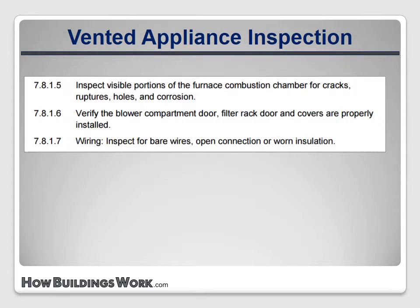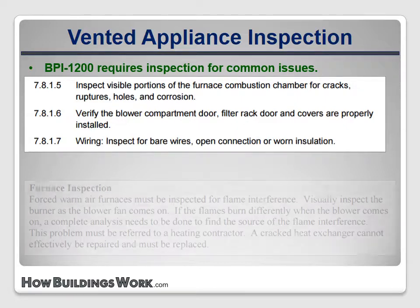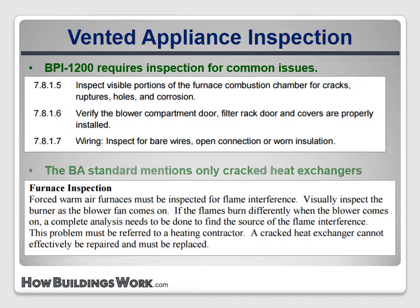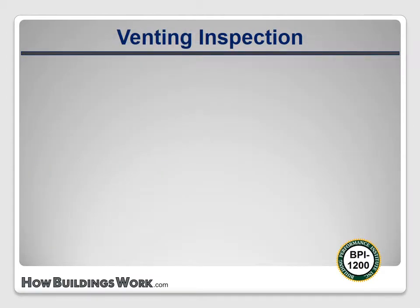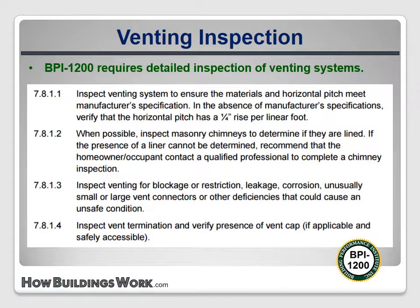BPI 1200 requires that a number of details be inspected on vented appliances, including wiring and integrity of ducted system components. The only one of these noted in the BA Standard is the furnace heat exchanger inspection. BPI 1200 also requires detailed inspection of venting systems, including vent pitch, proper support and terminations, presence of liners, and assessment of condition for rust and deterioration. None of this information is detailed in the BA Standard, but it could serve as a useful list for creating an inspection checklist.